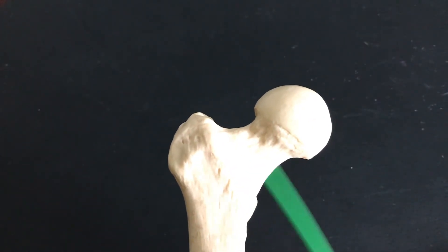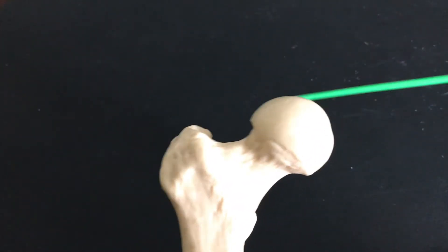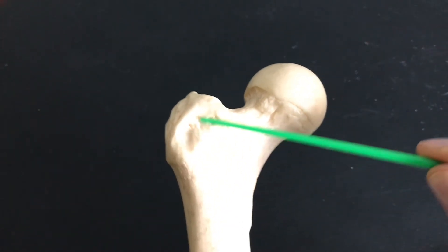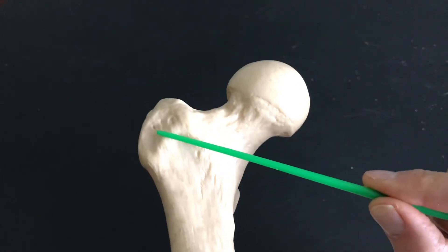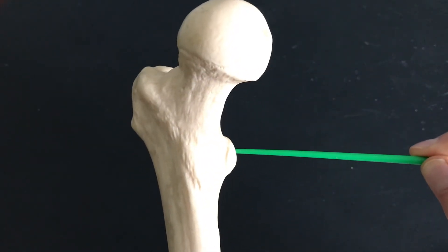There are actually a lot of ligaments that run through this region, but this is the head, the neck, greater trochanter, lesser trochanter. This one's big. This one's small, easy to remember.